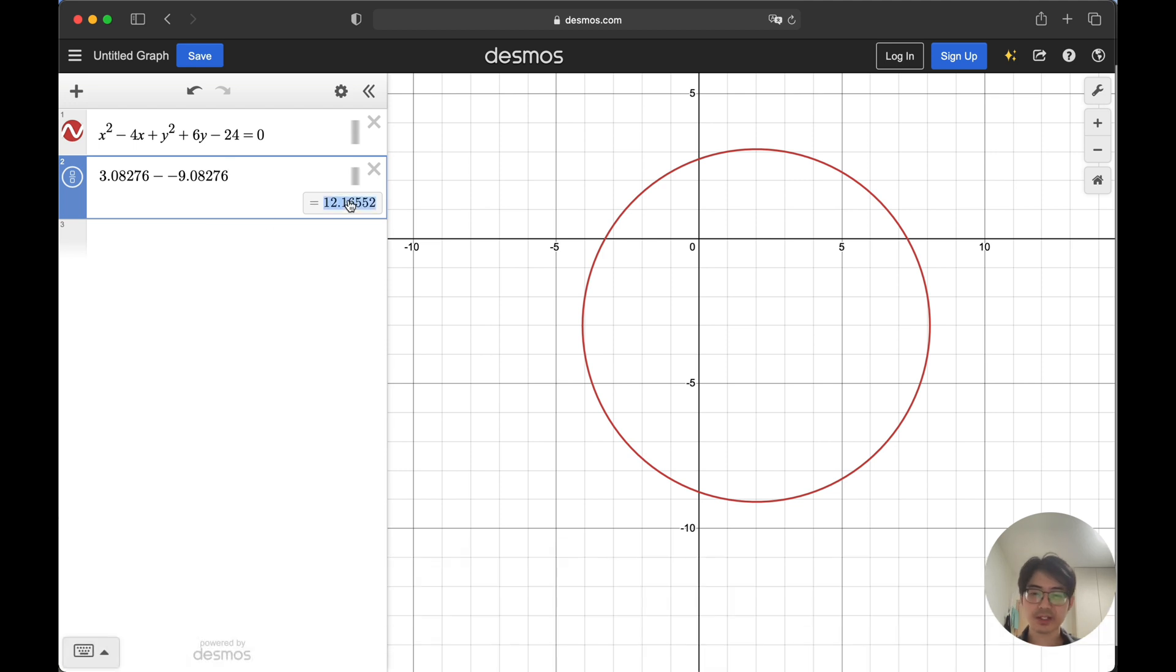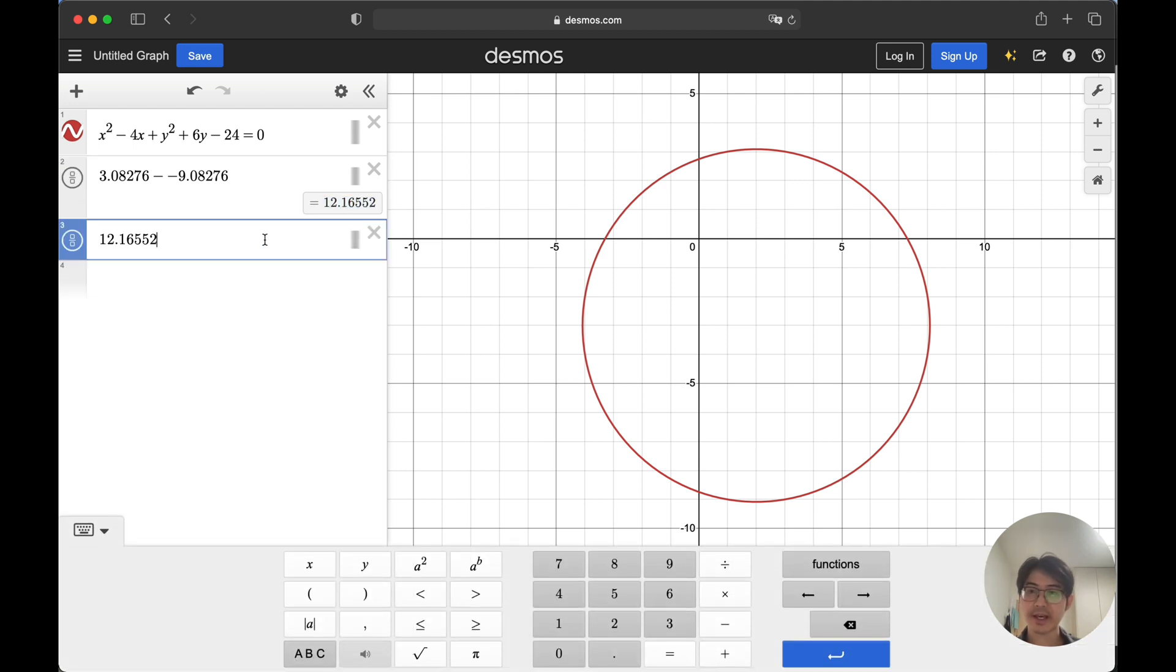Okay, let's copy this as well and divide that by two. We get 6.08276. And that is the length for the radius.